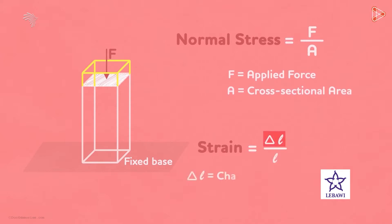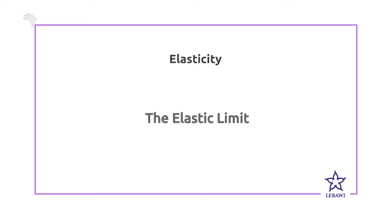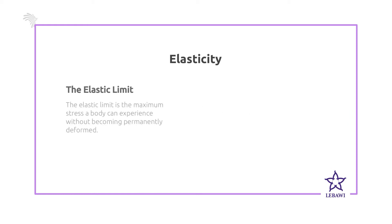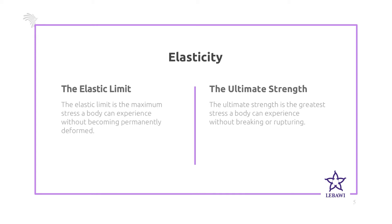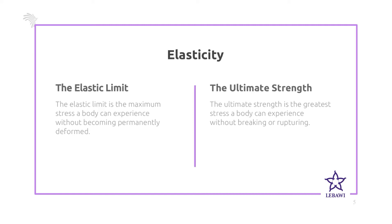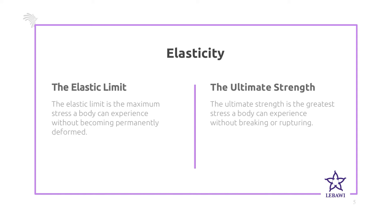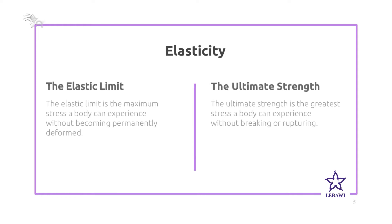Strain is basically measured in millimeter per meter, or we can also take it as a dimensionless physical quantity. Now there are two points related to elasticity. The first is called elastic limit — the maximum limit of a material to regain its original shape or size after the removal of the deforming force. The ultimate strength is the maximum point at which the material breaks or ruptures when force is continuously increased.